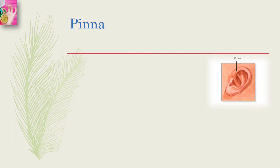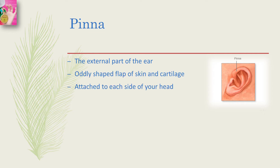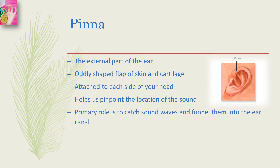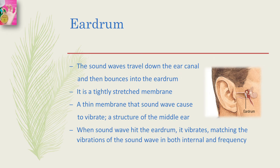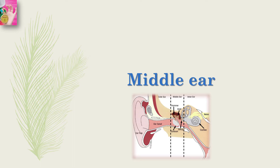The outer ear includes the pinna, the ear canal, and the eardrum. The pinna is an oddly shaped flap of skin and cartilage attached to each side of your head. It helps us pinpoint the location of a sound, but its primary role is to catch sound waves and funnel them into the ear canal. The sound waves travel down the ear canal and bounce into the eardrum, which is a tightly stretched membrane that vibrates matching the sound waves in both intensity and frequency.